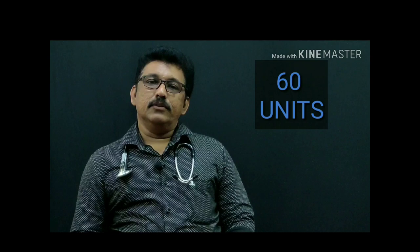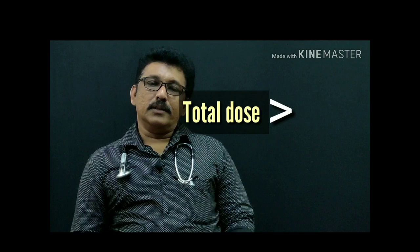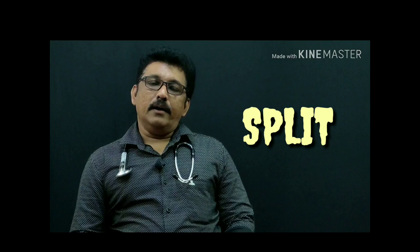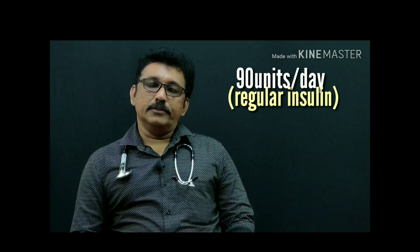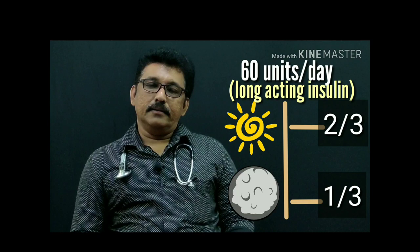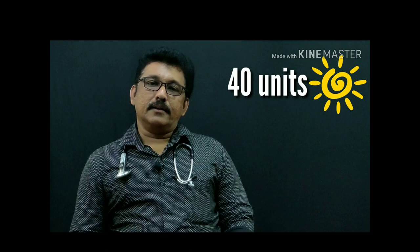If the total dose is more than 40 units, note that a standard insulin syringe holds only 40 units per 1 mL, so it is better to split the dose. My patient was on 90 units per day with regular insulin; reduced to 60 units for long-acting insulin. Two-thirds of that 60 units should be given in the morning and one-third at night, so 40 units long-acting or mixed-acting insulin in the morning.